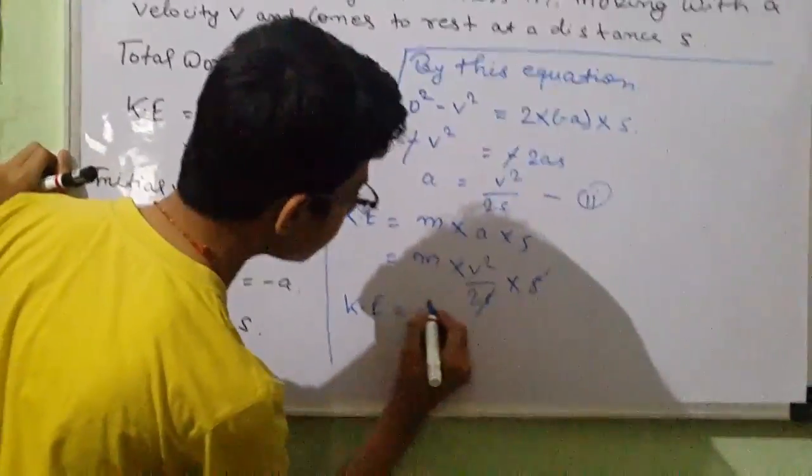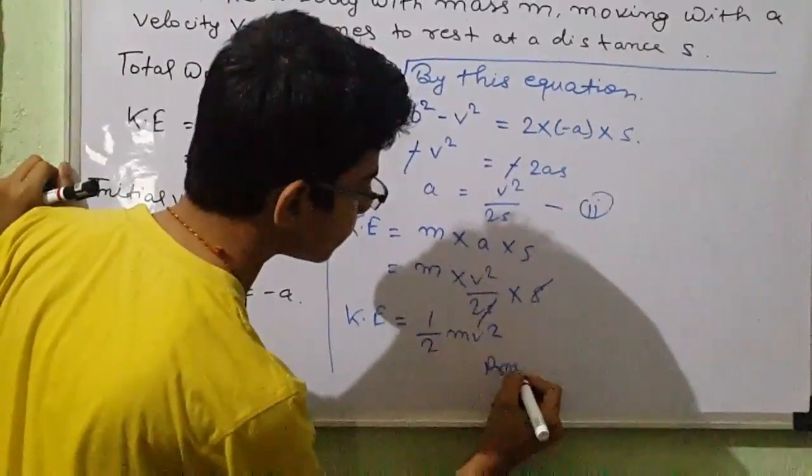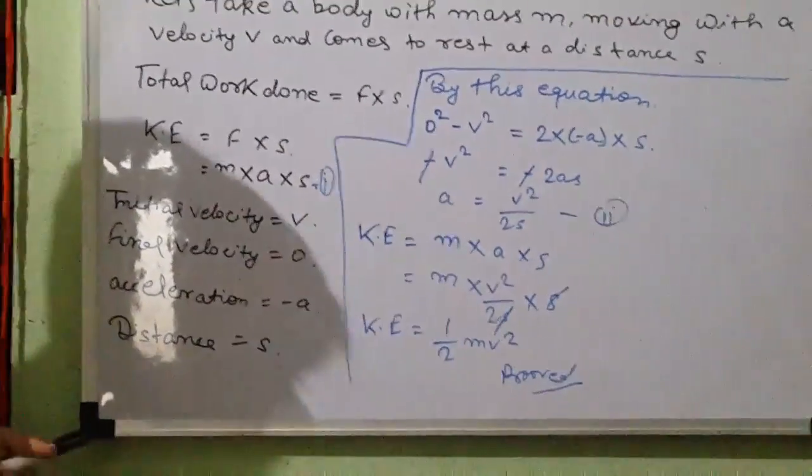So KE equals half mv squared, proved. This is the formula of kinetic energy.